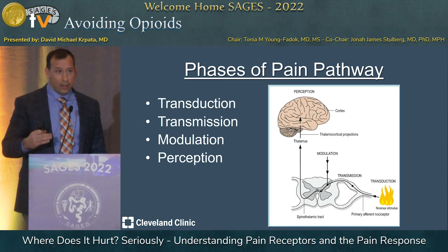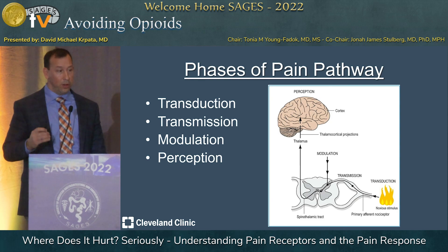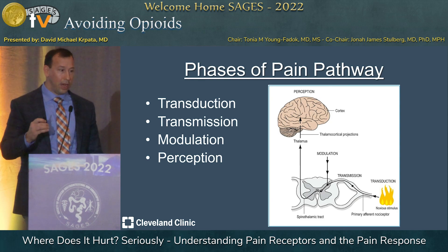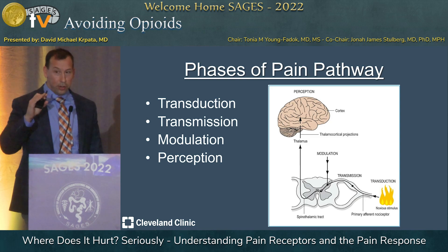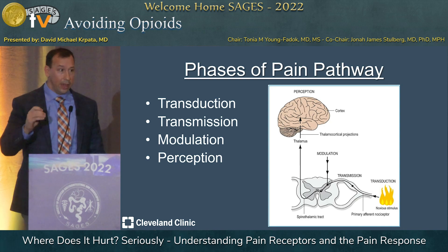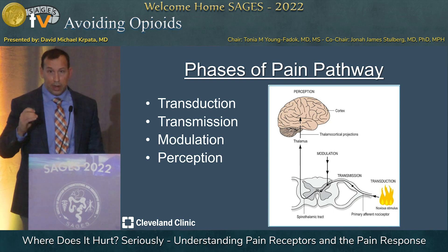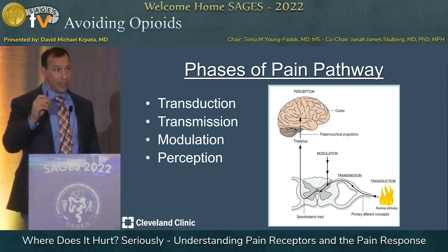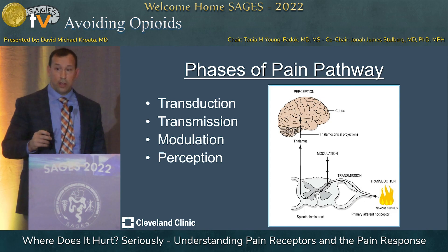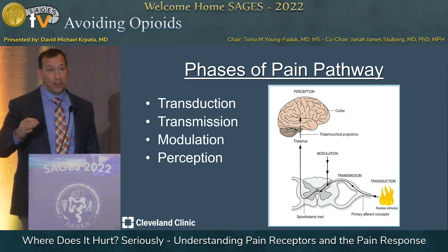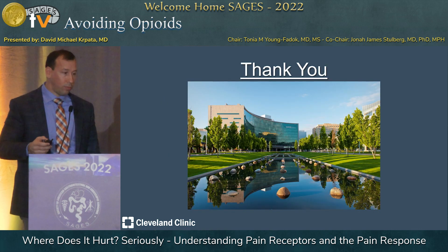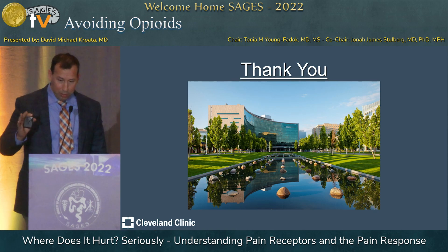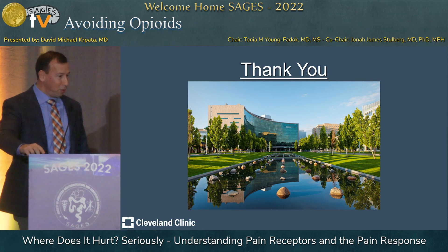As a surgeon, I think the biggest takeaway is understanding the phases of the pain pathway. If you understand transduction, transmission, modulation, and perception, you can think about what you're going to target: are you going to hit it at the level of the incision and tissue damage, try to prevent the signal from reaching the spinal cord, or improve the feedback through modulation? With that, thank you — and I tried to do my best impression of Dr. Nolte. I hope he would be proud.